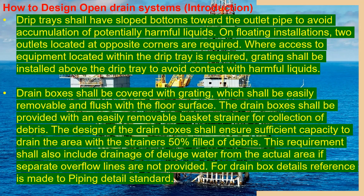Where access to equipment located within the drip tray is required, gratings shall be installed above the drip tray to avoid contact with harmful liquids. Drain boxes shall be covered with gratings which shall be easily removable and flush with the floor surface. The drain boxes shall be provided with an easily removable basket and strainer for collection of debris. The design of drain boxes shall ensure sufficient capacity of drainage with a strainer 50% filled with debris. These requirements shall also include drainage of deluge water from the actual area. If separate overflow lines are not provided, for drain box details reference is made to the piping detail standard.